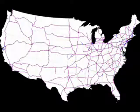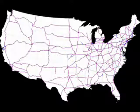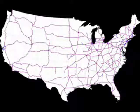Here's the interstate system — freeways, if you will. For the even numbers, we need a mnemonic device: E for east-west, and north-south have O's, so they're odd.